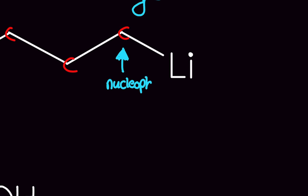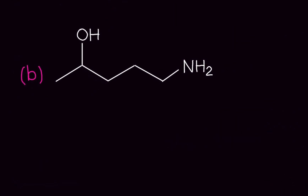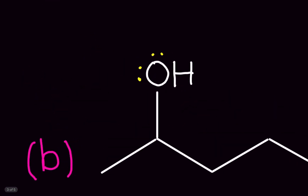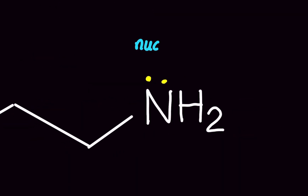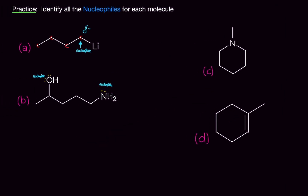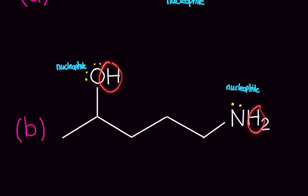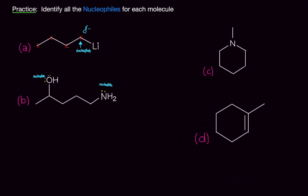For molecule B, even though no electrons are drawn in, you need to draw them in: oxygen has two lone pairs and nitrogen has one lone pair. Since we see lone pairs, we can basically ignore inductive effects. The oxygen and nitrogen are both nucleophiles — they will do the attacking. To be clear, it's not the entire molecule nor the hydrogens; only the electronegative atoms — oxygen and nitrogen — are the nucleophiles.